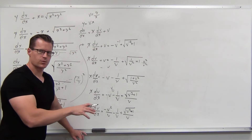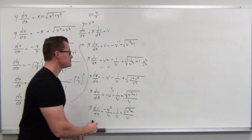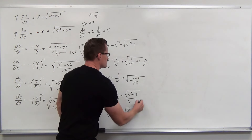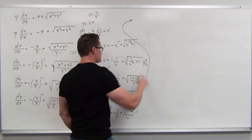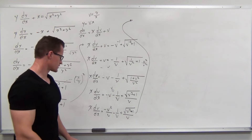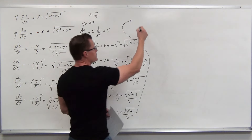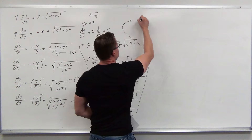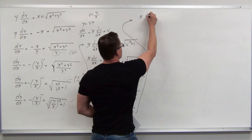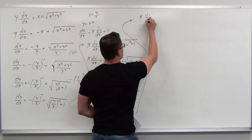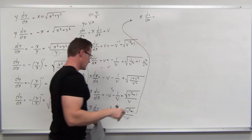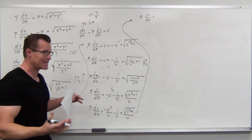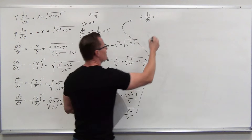Now let's separate all our v's on one side with dv, and our x's on the other side with dx, to integrate. This step involves a gigantic fraction on the left — it's a tough integral.